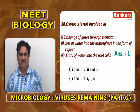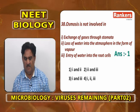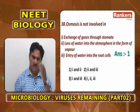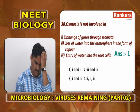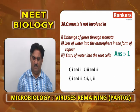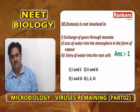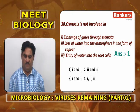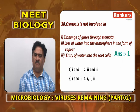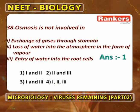Loss of water into the atmosphere in the form of water vapor — this is nothing but transpiration. Transpiration always occurs by diffusion, from higher concentration to lower concentration. So exchange of gases through stomata is by diffusion, and loss of water into the atmosphere as water vapor is also diffusion, but is called transpiration. Entry of water into root cells is only by osmosis.